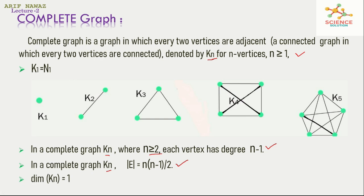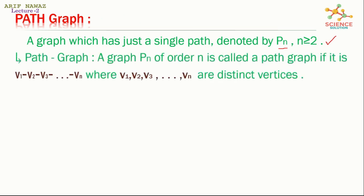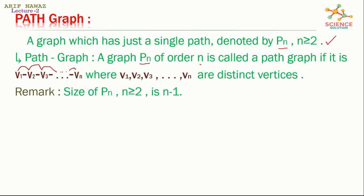The diameter of the complete graph of n vertices is equal to 1. Path graph: a graph which has just a single path is called a path graph, denoted by P_n where n is greater than or equal to 2. A graph P_n of order n is called a path graph if it is of the form: vertex v1 adjacent with v2, v2 adjacent with v3, and so on up to vertex v_n, where v1, v2, v3, …, v_n are distinct vertices. The size of a path graph of n vertices is n−1.